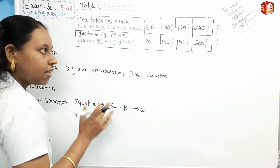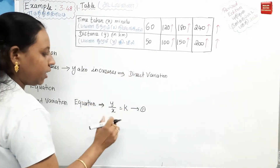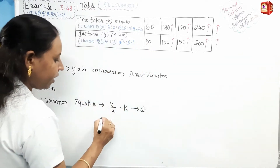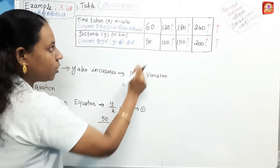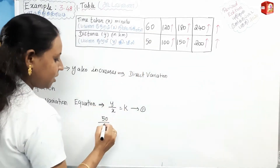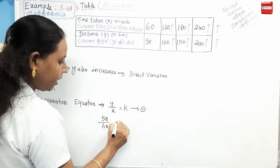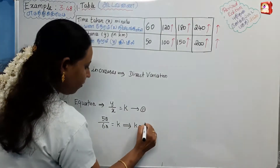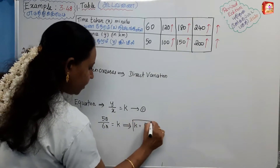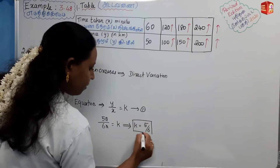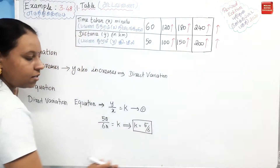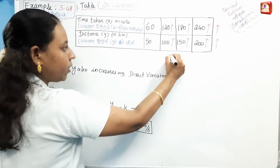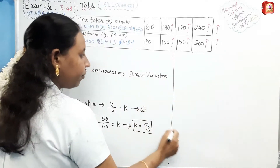What values are the same? The first value: Y value is 50, X value is 60. So K equals 50 by 60, which simplifies to 5 by 6. This is the constant of variation — that is the first answer.